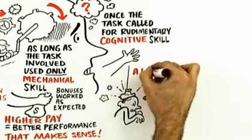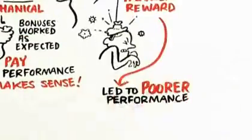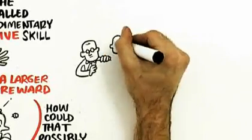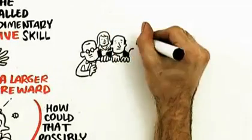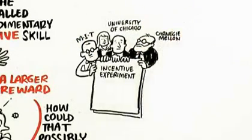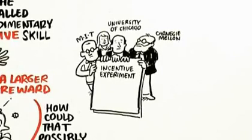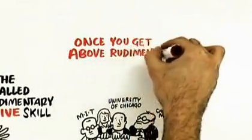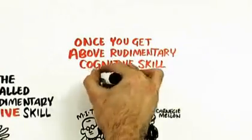Now this is strange. A larger reward led to poorer performance. How can that possibly be? Now what's interesting about this is that these folks here who did this are all economists. Two at MIT, one at the University of Chicago, one at Carnegie Mellon. The top tier of the economics profession. And they're reaching this conclusion that seems contrary to what a lot of us learned in economics, which is that the higher the reward, the better their performance. And they're saying that once you get above rudimentary cognitive skill, it's the other way around.